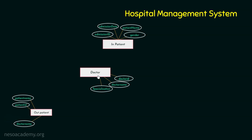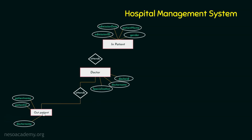We have the doctor entity and the patient entity where we have inpatient and outpatient. Now let's start constructing the ER diagram step by step. I am going to link the doctor entity with the inpatient entity with a relationship. What is that relationship? Attends. This doctor attends this inpatient, and doctors also need to attend outpatients as well. So doctors have an attends relationship with inpatients as well as outpatients.